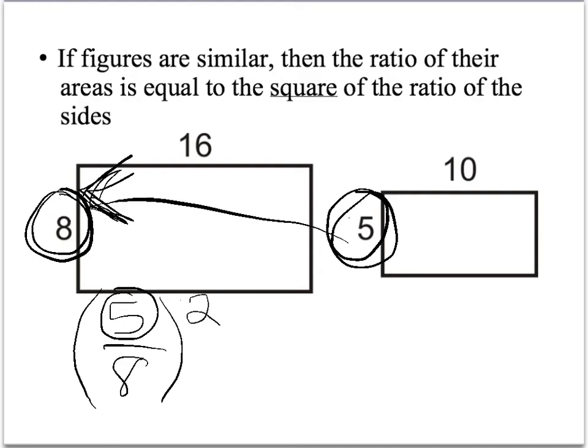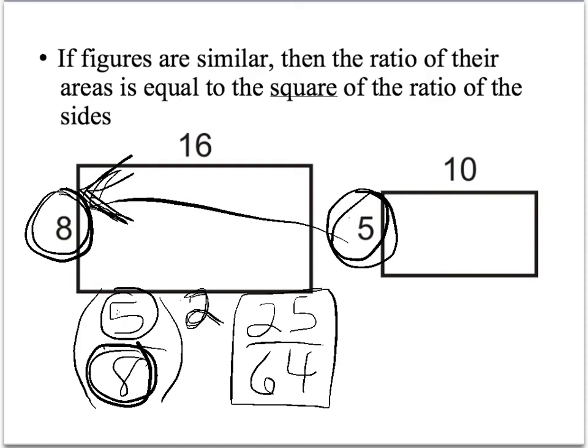Easiest thing to do, I'm going to square 5. Remember, squaring is multiplying a number by itself twice. I'm going to multiply 5 times 5. That will give me 25. 8 times 8 is 64. So, this is my ratio that says that this rectangle is 25/64 the size of this one. All you have to do is square the ratio of two sides.